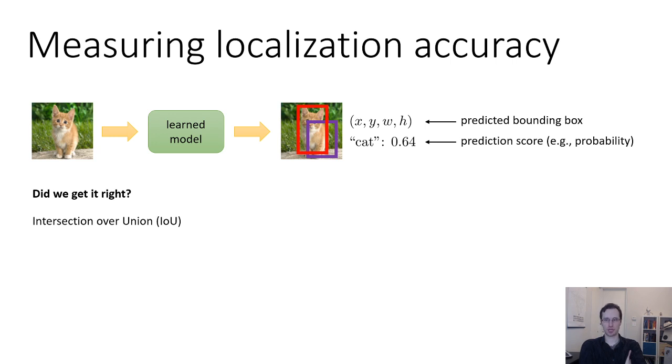So, a common convention in object localization as well as object detection is to use a measure called intersection over union. The intuition here is the following. We would like to say that the localization is correct if there is high overlap between the true bounding box in red and the predicted bounding box in purple. But if the object is larger, the area of the overlap will always be larger even if your bounding box is in the wrong spot. So, if the object is tiny, maybe you've got the bounding box in almost the right spot, but it's a little bit off. But because it's so tiny, the actual area of the overlap is tiny.